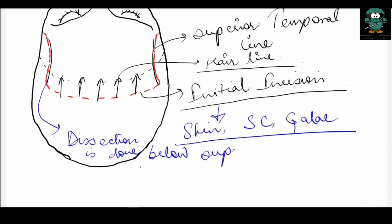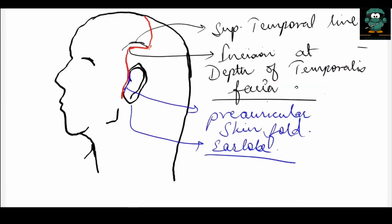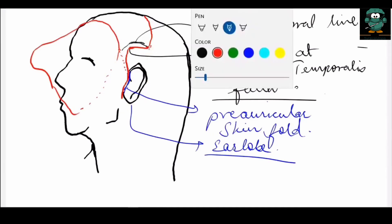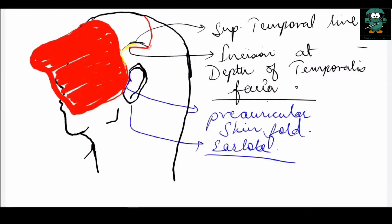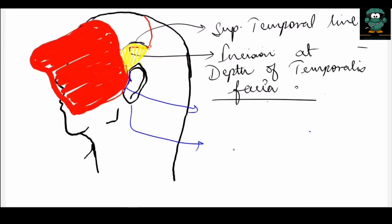Once the flap has been dissected from the lateral aspect of the skull, a glistening white temporalis fascia will be visible on the lateral aspect of the head. This temporalis fascia is shown here colored in yellow.